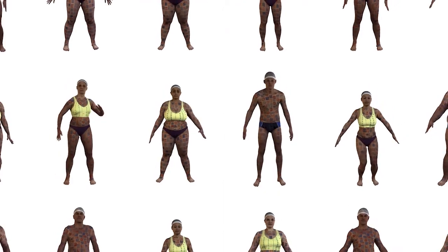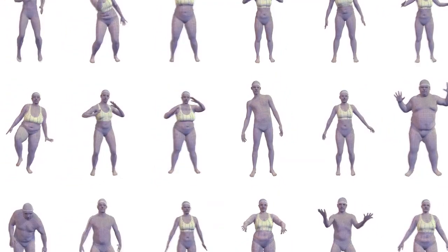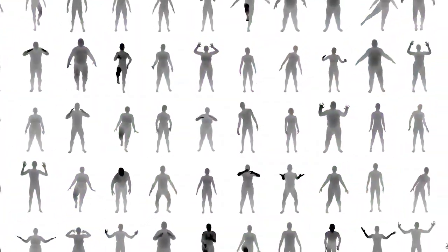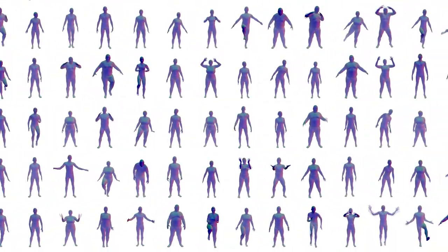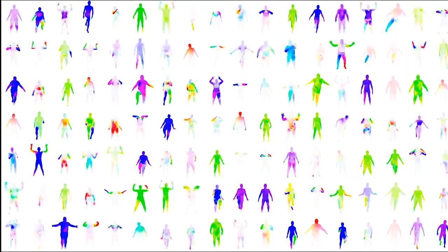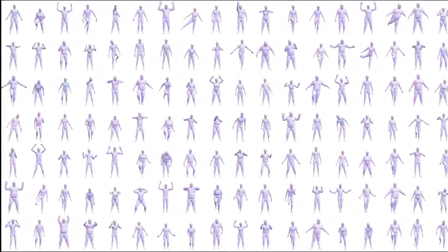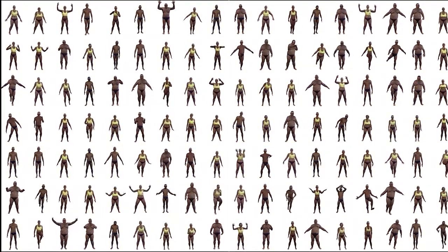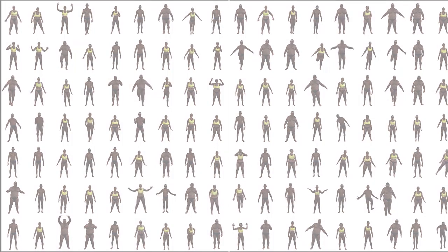The D-FAUST dataset is the largest collection of 3D human scans with accurate ground truth correspondence. Time-varying 3D data is becoming more available, and extending computer vision algorithms to deal with such data is important. To develop and test new methods, the field requires rich raw data and associated ground truth. D-FAUST fills an important need in the community, supporting research in vision, graphics, and machine learning.